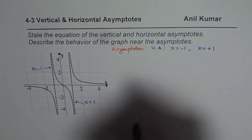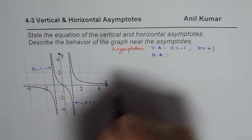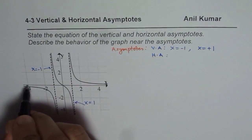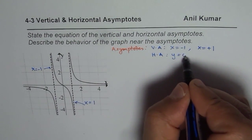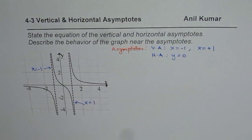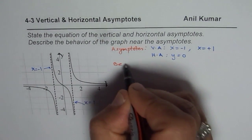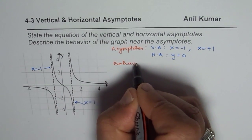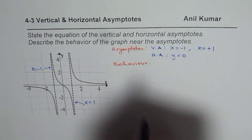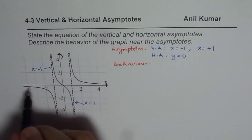And there is one horizontal asymptote. The horizontal asymptote is y equals to zero. So the x-axis, y equals to zero, is your horizontal asymptote. Now let us check behavior near the asymptote — that is the next step.